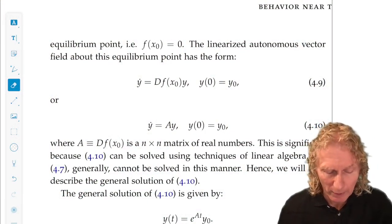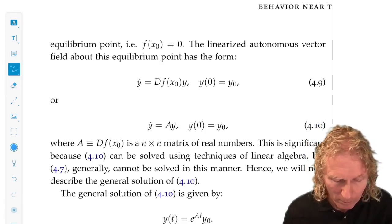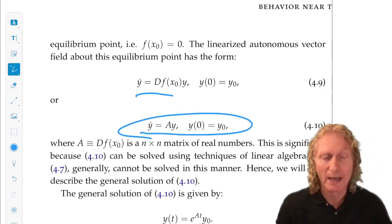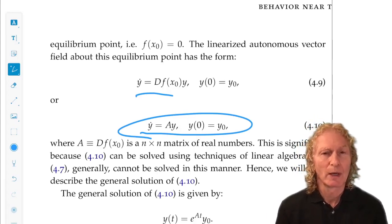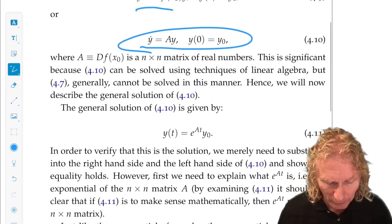So this is where we ended up last time. This is the linear equation. We write it in a simple form here, where A is the n by n Jacobian matrix, and we want to talk about solving it. Well, this is a solution.